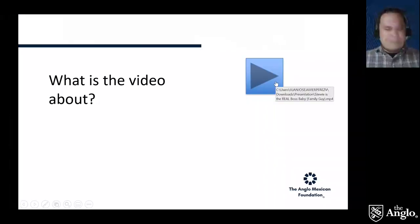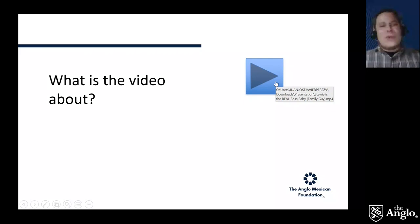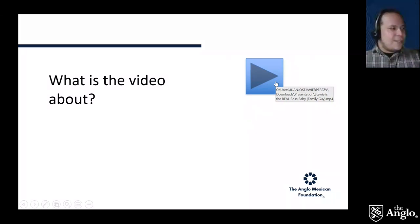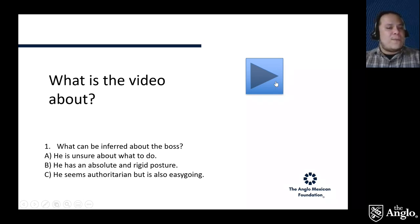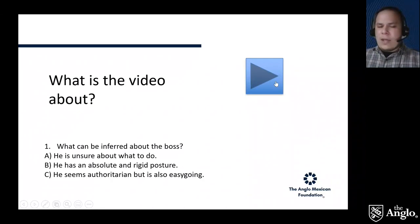Antonio says the first day at work. Aurora agrees. Elizabeth also agrees. Mireya says how about the work schedule. Pretty much you're all correct. As you can see, you didn't have problems with listening because you already understand the idea. But what if I ask you this: what can be unfair about the boss? A — he isn't sure about what to do; B — he has an absolute unrigid posture; or C — he seems authoritarian but he's also easygoing. A, B, or C — what is the correct answer?